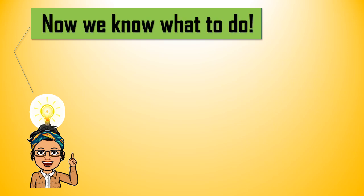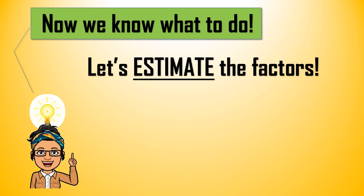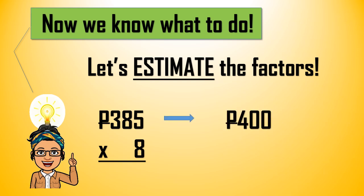Now we know what to do. Let's estimate the factors. 385 pesos times 8. 385 will be rounded off to 400, and 8 will be rounded off to 10.